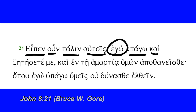'Kai,' the connective, and 'zetesete' — this is from 'zeteo,' to seek. This is the future, second person plural, future active indicative — you will seek. The pronoun here, 'me' — so I go away, you will seek me.